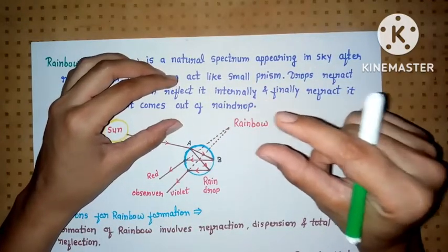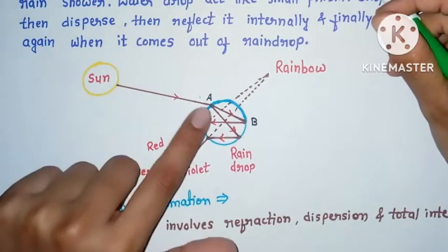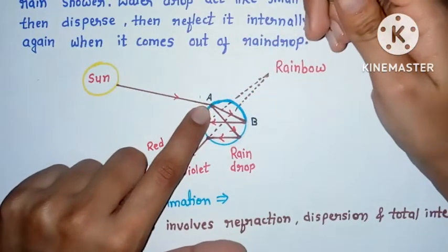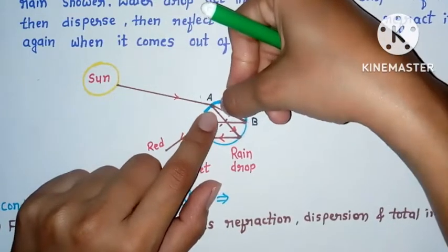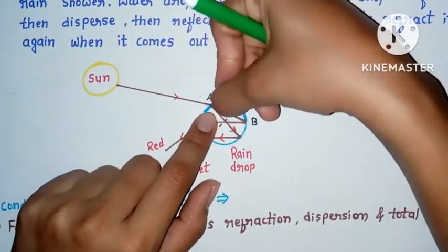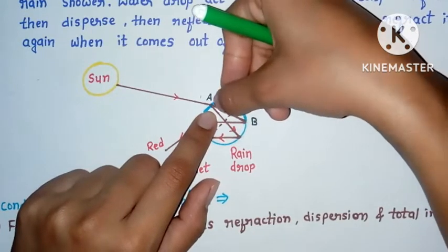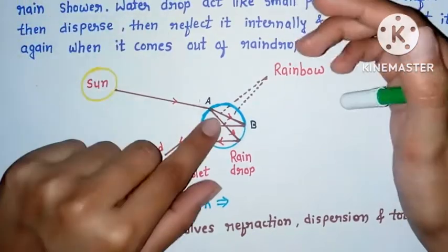When sunlight enters the drop, at this point light travels from air to water, meaning from rarer medium to denser medium. It bends toward the normal. While bending, it also disperses into seven colors. Dispersion of light means white light splits into seven constituent colors.